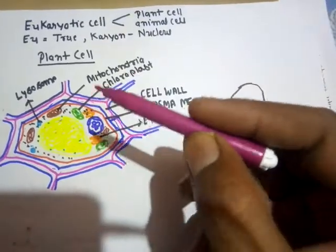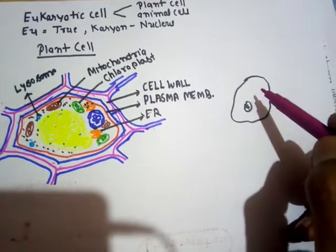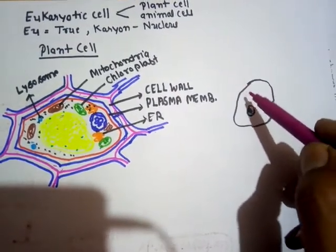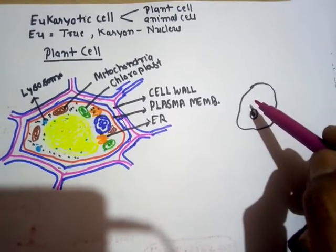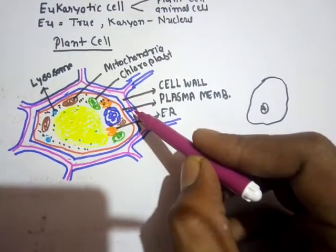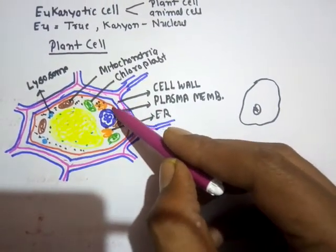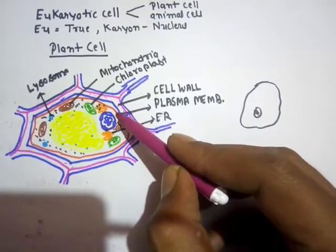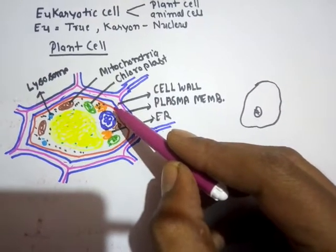On the other hand, in the case of an animal cell — for example, an amoeba cell — the plasma membrane is elastic, so due to this elasticity the amoeba cell can easily change its shape. But in the case of a plant cell, the cell wall is present and due to it they are unable to change their shape. Inside the cell wall, a thin membrane made up of lipid and protein is present, known as the plasma membrane.